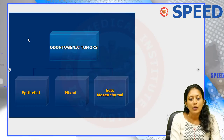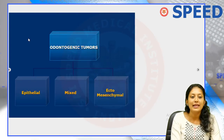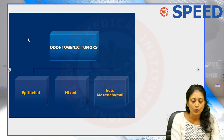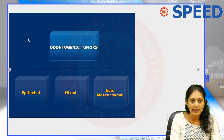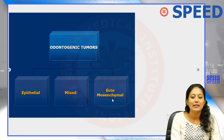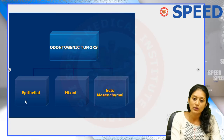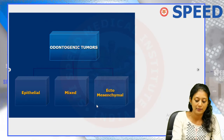Therefore, odontogenic tumors fall into three categories: number one, those arising from odontogenic epithelium; number two, those arising from ectomesenchyme; and the third type, the mixed tumors, which arise from both epithelium and ectomesenchyme.